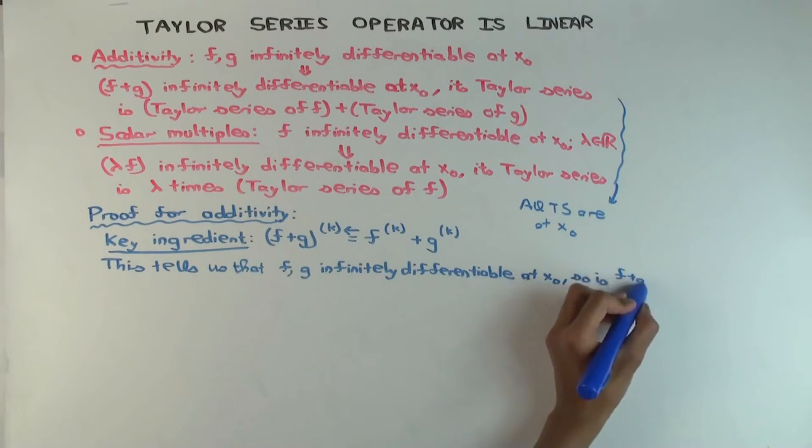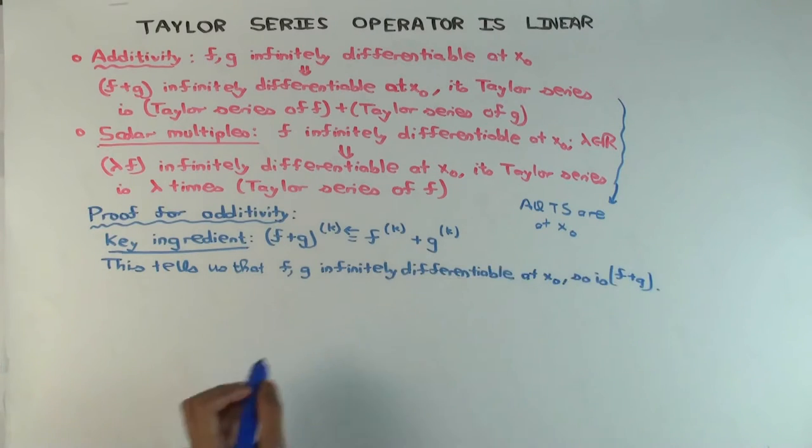Okay, good. So we got the first part. We're just saying yes, f plus g does have a Taylor series. Now I want to actually show that the Taylor series are equal. Okay. And that again will follow from this. But let's see how it follows. So let's just write down the three Taylor series and then check whether they add up correctly.